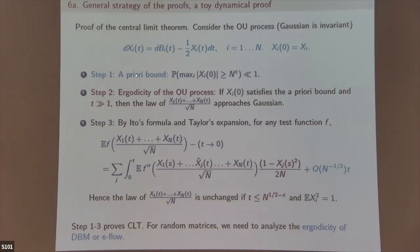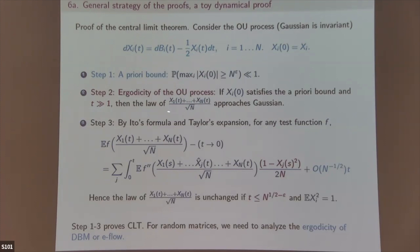Step 2: the OU process converges to Gaussian for time t > 1 by ergodicity. Step 3: show that (X_1(t) + ... + X_n(t)) / √n does not change much from time 0 to time 1. To prove the change is small, take a test function and compute by Itô's formula. The Itô formula always gives a second-derivative term; by calculation this is (1 − X_j^2).